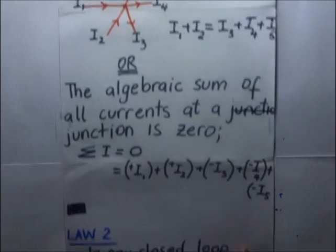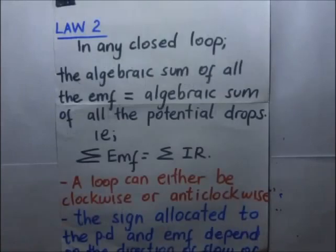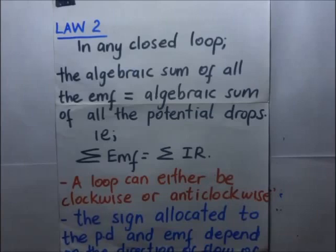The second law of Kirchhoff states that in any closed loop, the algebraic sum of all the EMFs in that loop should be equal to the algebraic sum of all the potential drops.